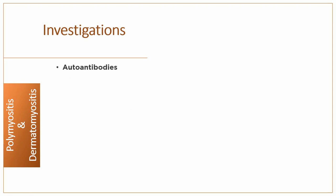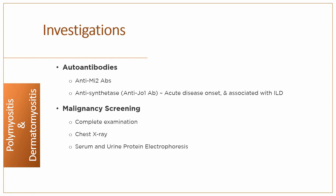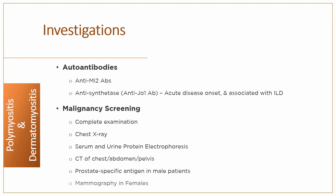Antibodies associated with polymyositis and dermatomyositis include anti-Mi2 antibodies and anti-JO1 antibodies. Anti-JO1-associated disease is associated with acute onset and interstitial lung fibrosis, and should be treated aggressively. Screening for underlying malignancy should be undertaken routinely; workup includes full examination, chest X-ray, serum and urine protein electrophoresis, CT scan of chest, abdomen and pelvis, prostate-specific antigen for men, and mammography for women.